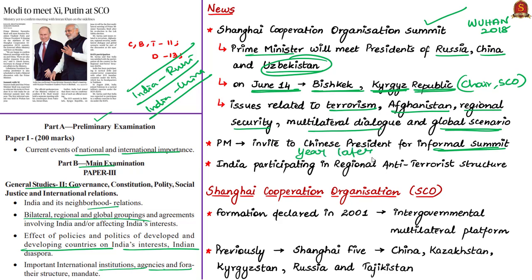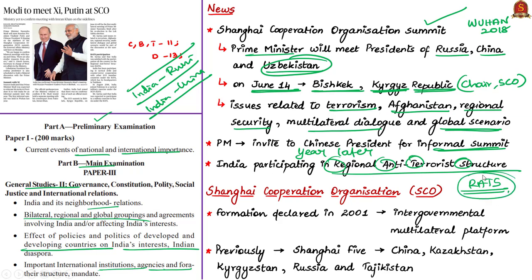India is also participating in the Regional Anti-Terrorist Structure of the Shanghai Cooperation Organization. India has been participating in tactical drills and counter-terror operations with other SCO member countries under the RATS framework. In August 2018, India, Pakistan and other countries joined a tactical military exercise under this RATS framework, and this year India is also expected to participate in a military exercise in Russia under RATS.